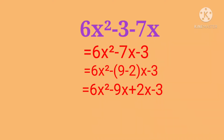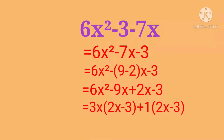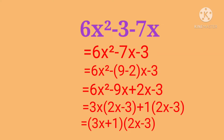From 6x squared minus 9x, take the common factor 3x to get 3x(2x minus 3). Then from 2x minus 3, take common factor 1, giving (2x minus 3)(3x plus 1) as the factored form.